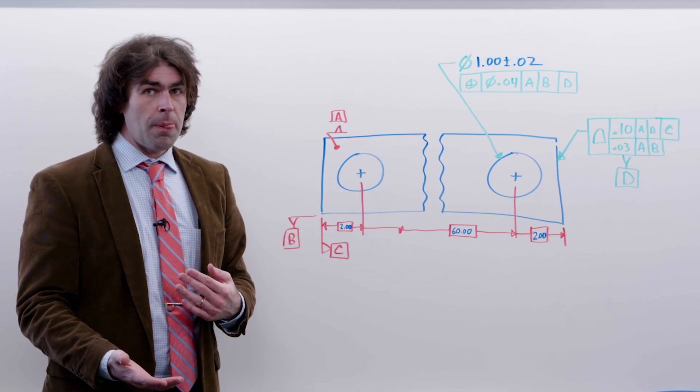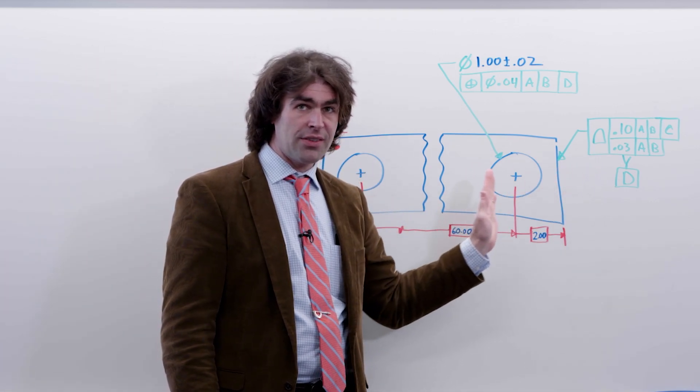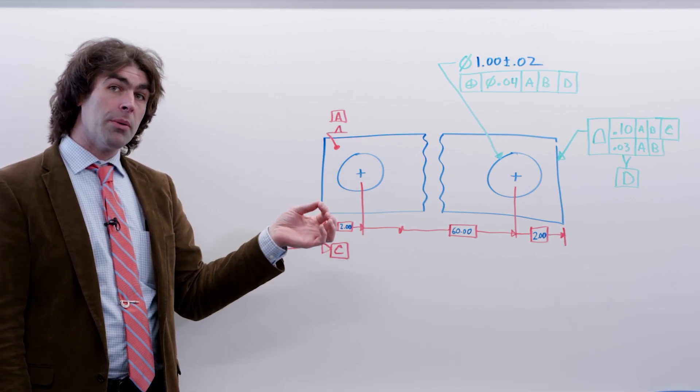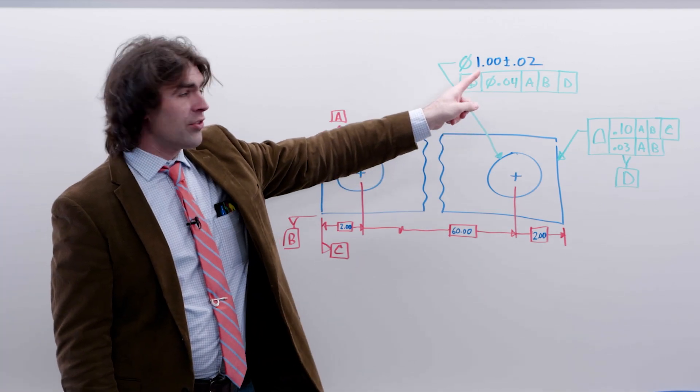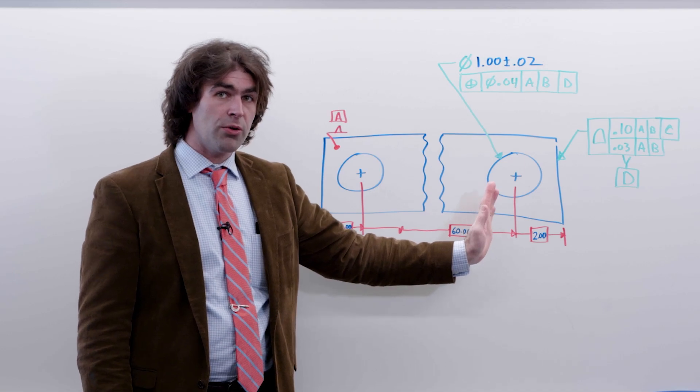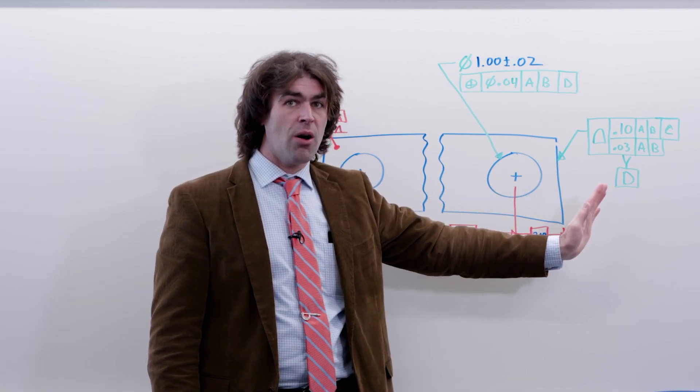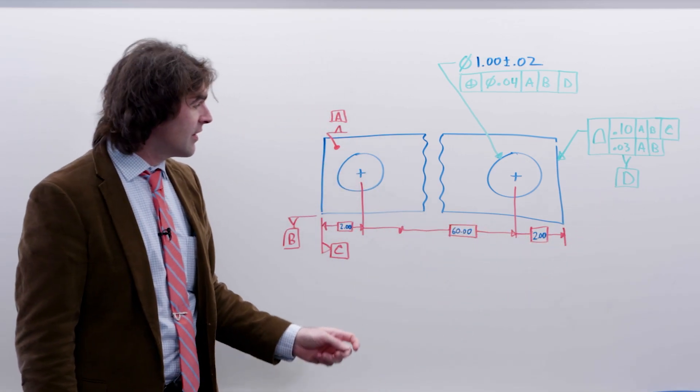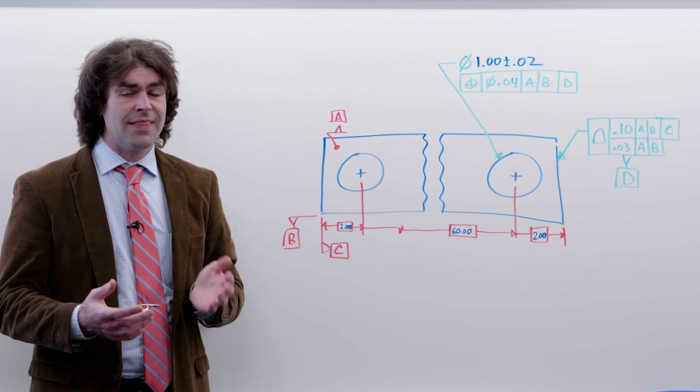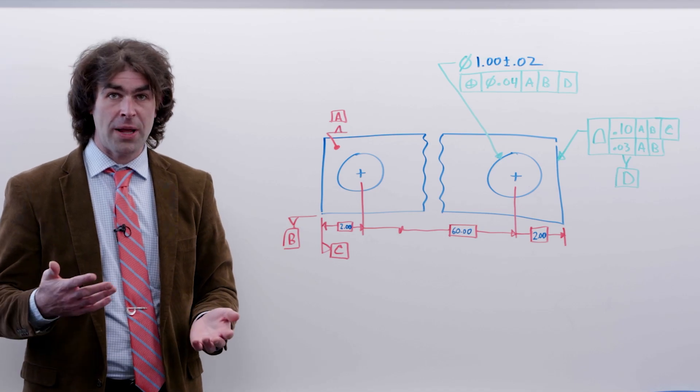So what happens here is that now this surface can move 50 thousandths left and right in relation to the original datum reference frame. So if we're measuring the location of this hole to this end, the hole goes with it. So if this is 50 thousandths this way and the hole is dead on, there's an additional 50 thousandths distance between the two holes. And that's what I mean.